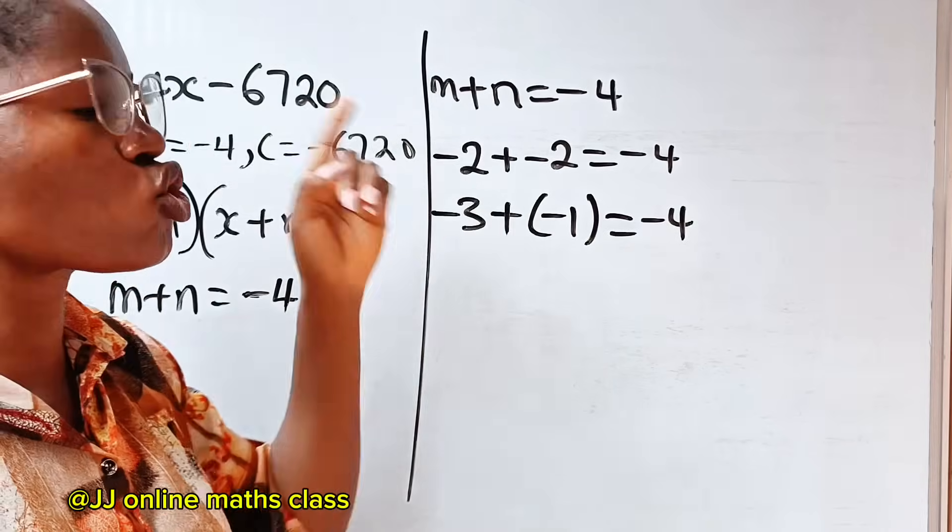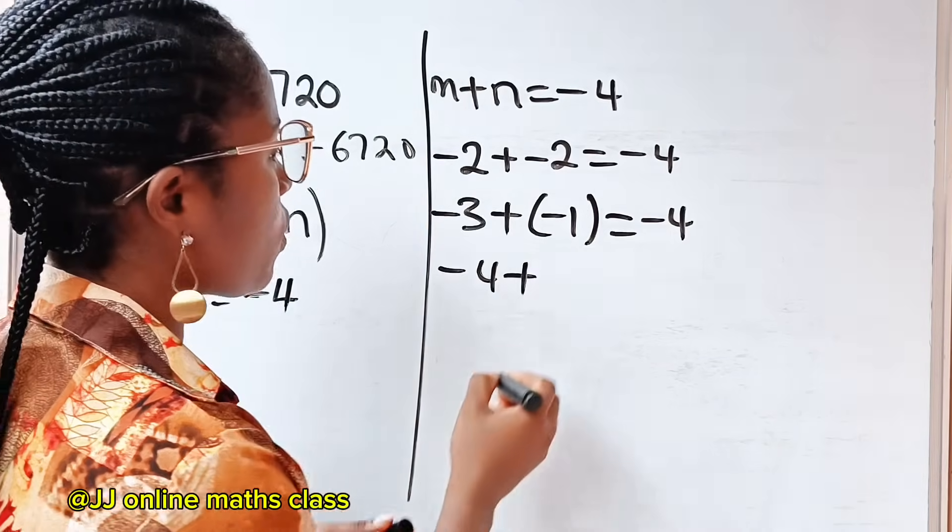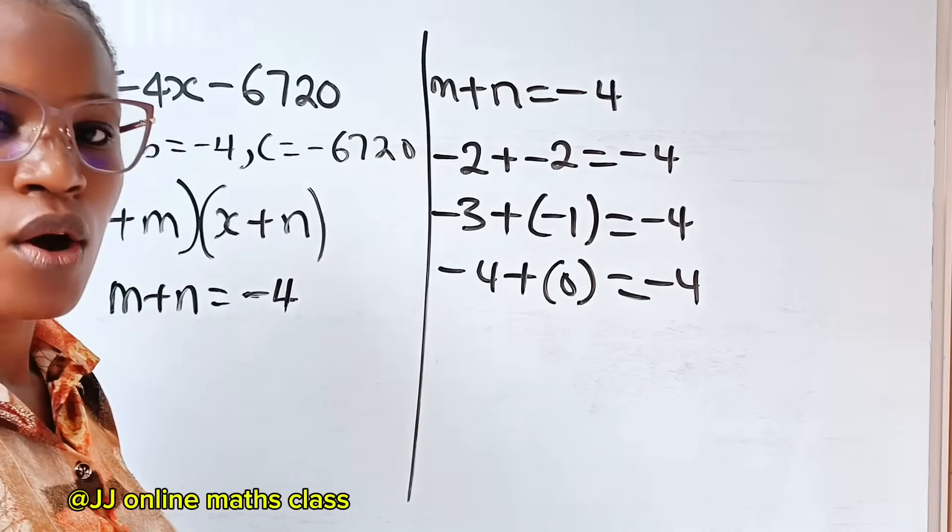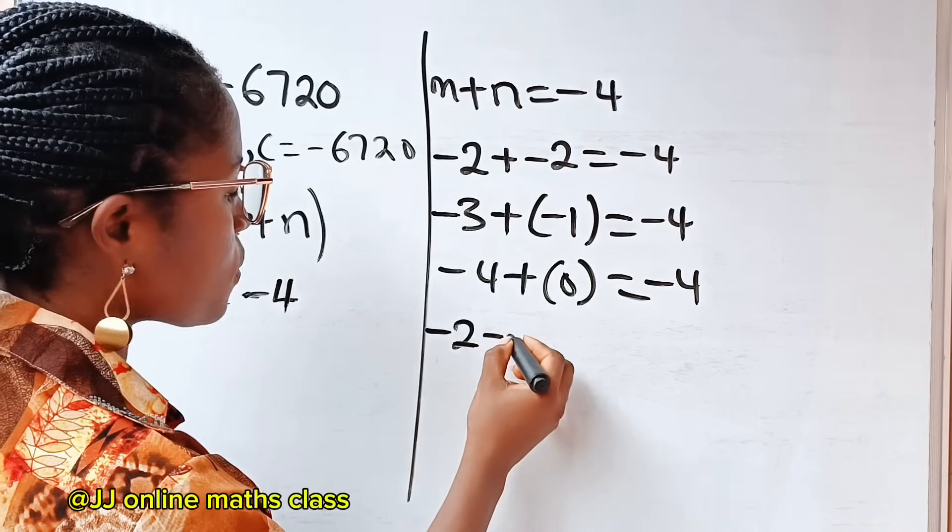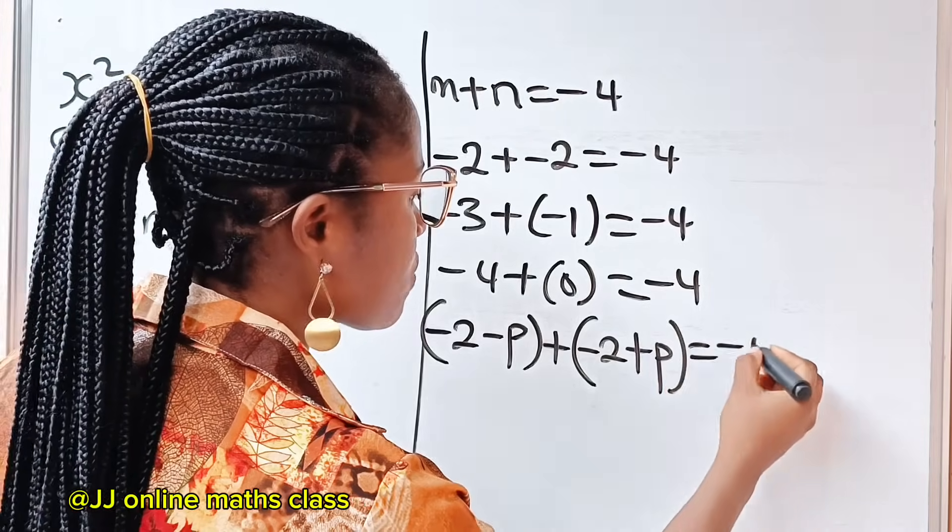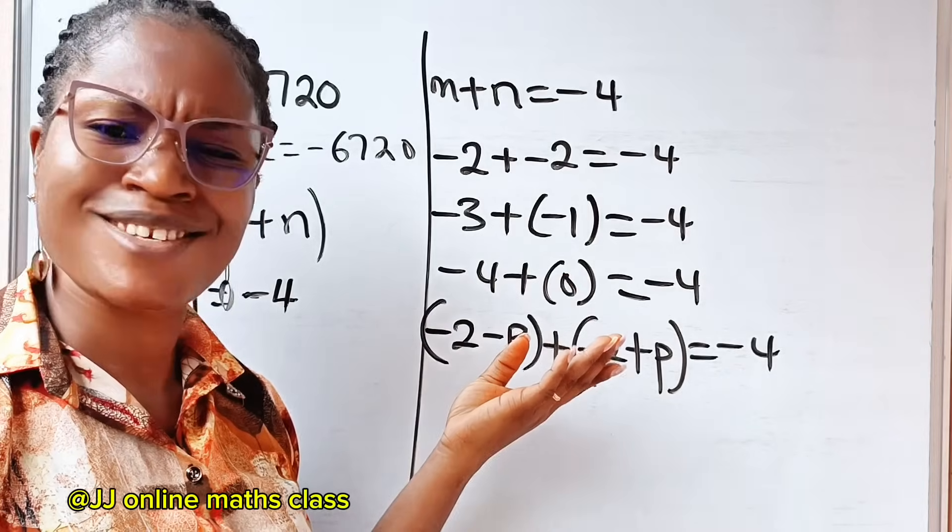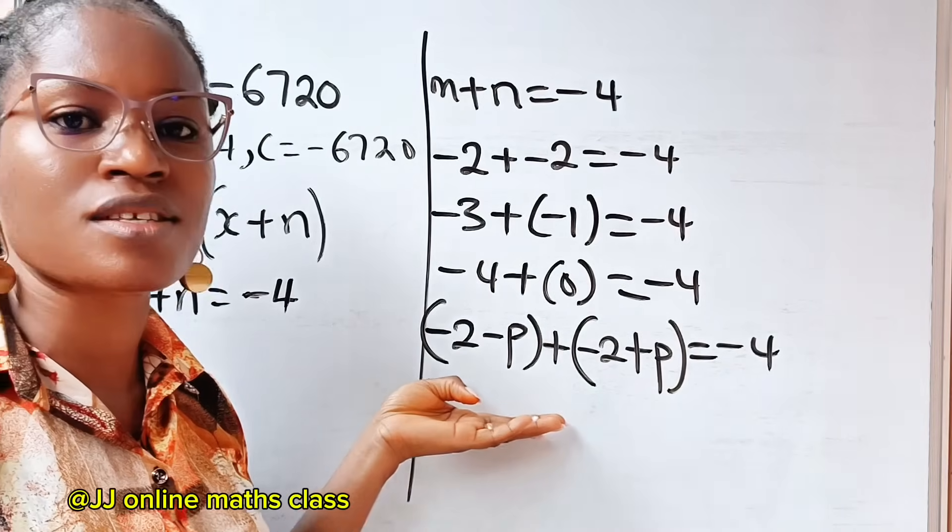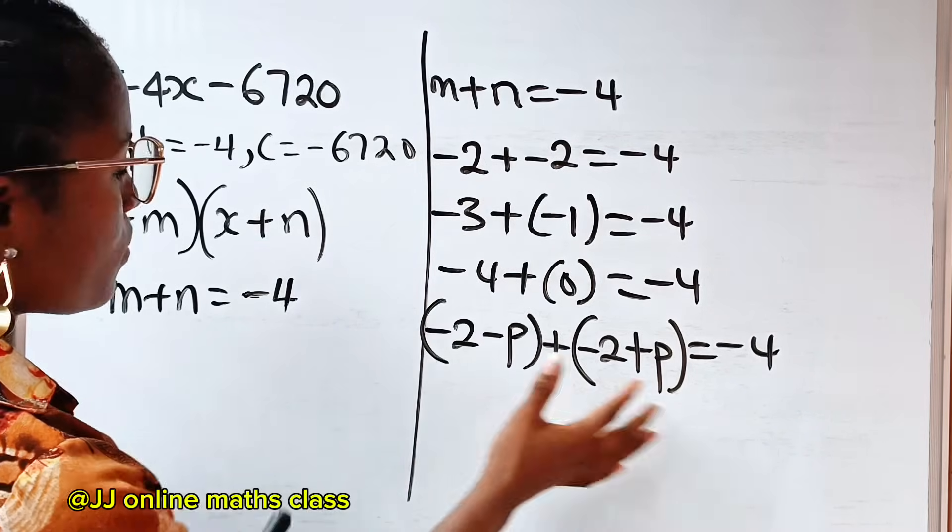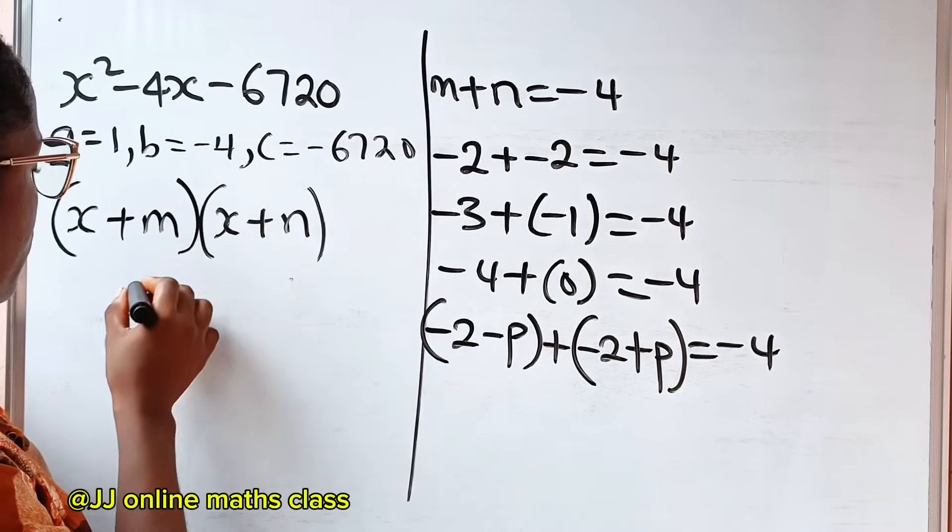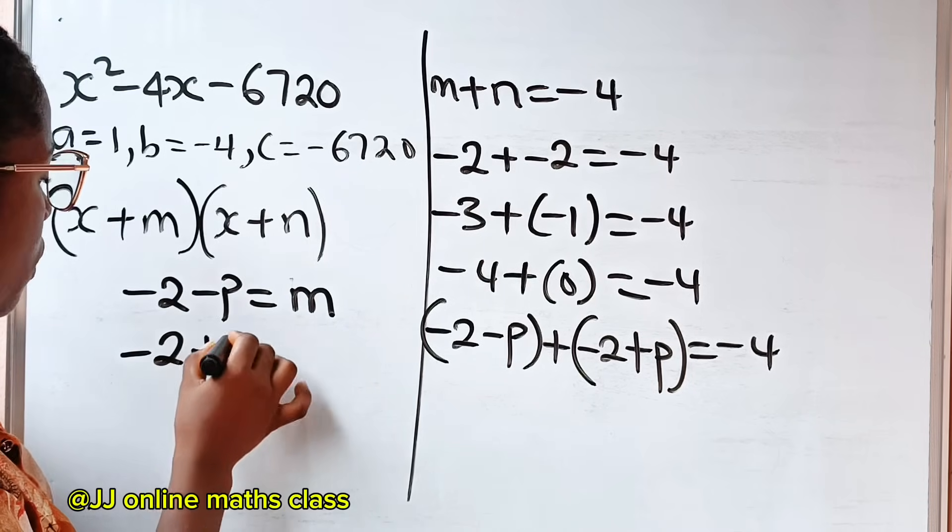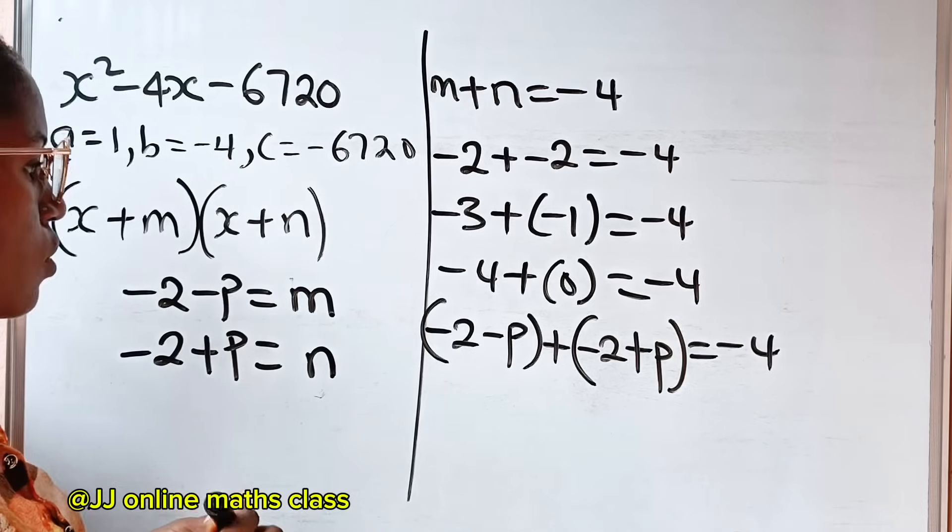Let's try 2. Minus 2 minus 2 will give us minus 4 plus minus 2 plus 2 will give us 0. So you see that minus 4 plus 0 is still minus 4. So it means that if we have minus 2 and we subtract a certain number from it, and then we have this minus 2 again and add the same number to it, we still get minus 4. If this equation is correct, then it simply means that our m is going to be this, while our n is going to be that.